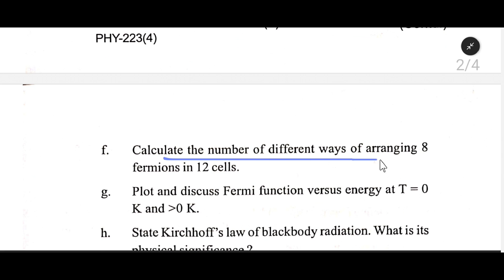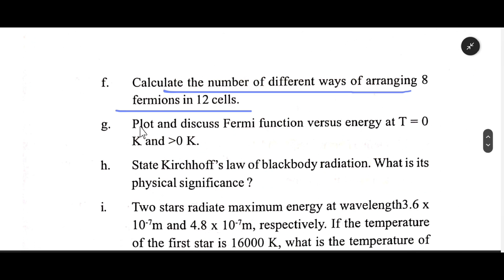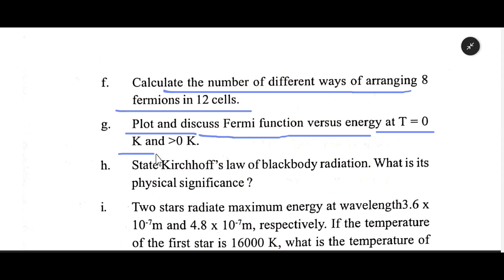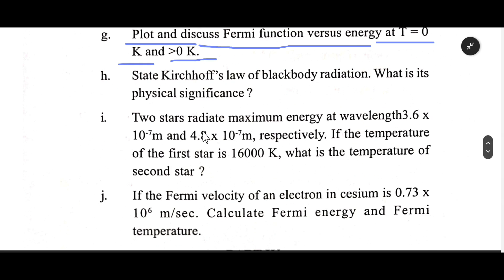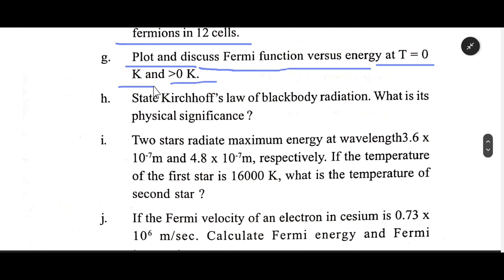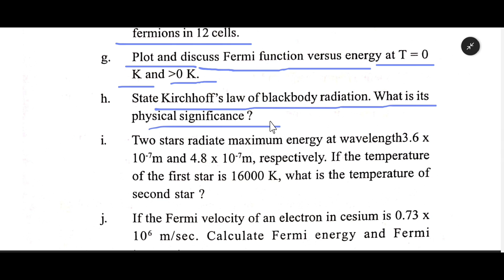Calculate the number of different ways of arranging 10 bosons in 7 cells. Calculate the number of different ways of arranging 8 fermions in 12 cells. Plot the Fermi function versus energy at T = 0 K and T > 0 K. State Kirchhoff's law of blackbody radiation and discuss its physical significance.